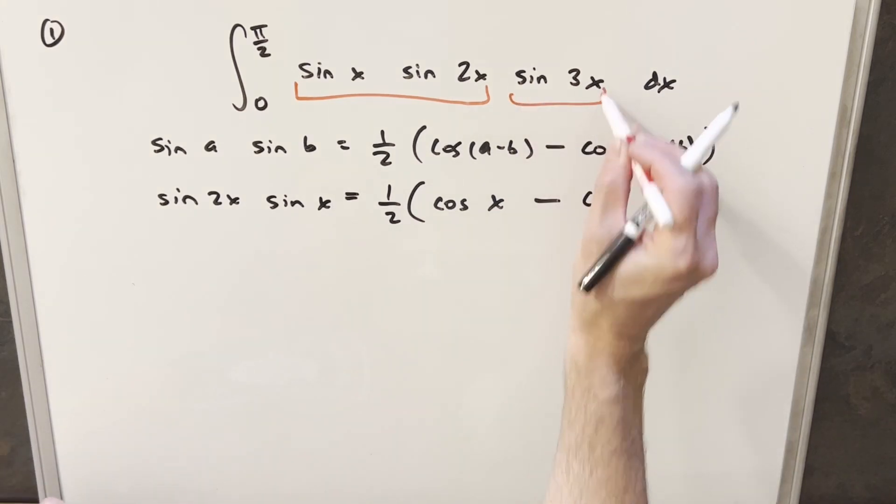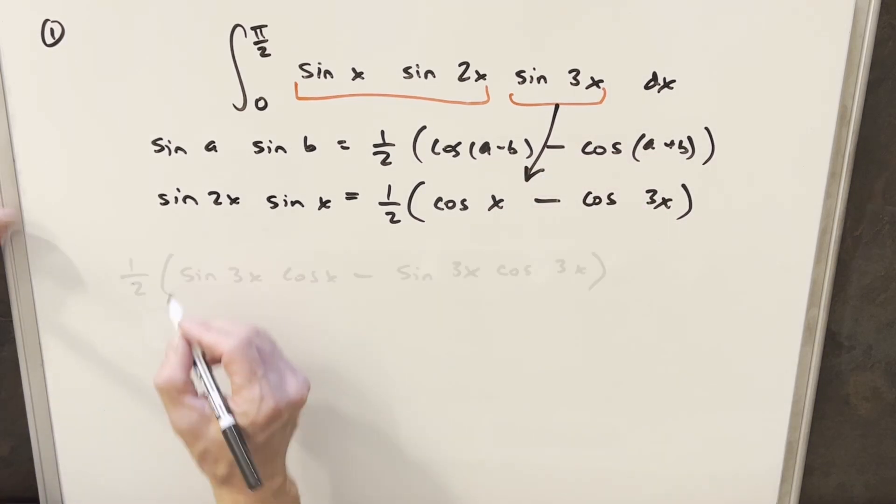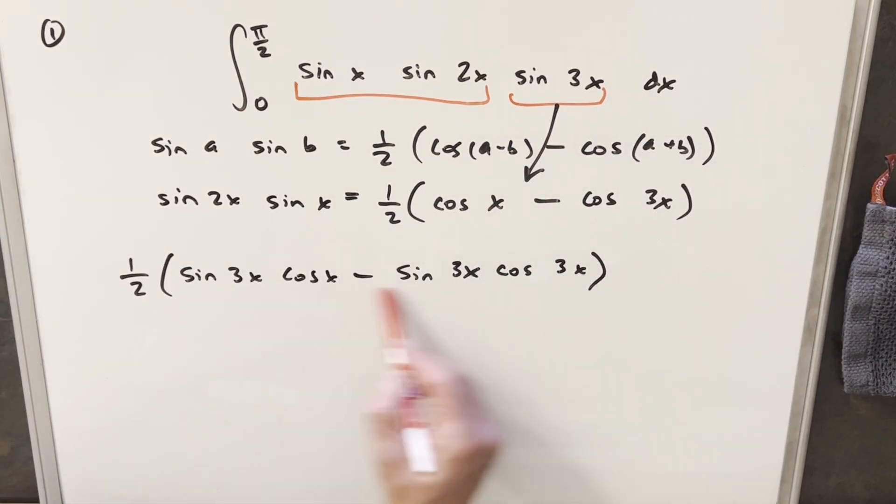And now I'm ready for my sine of 3x, so what I'm going to do is let's just multiply that into this expression right here. Now I've distributed my sine of 3x into this expression, giving us this here. And now we're going to need another identity for this one, and this one will use the different angle formula for sine and cosine.